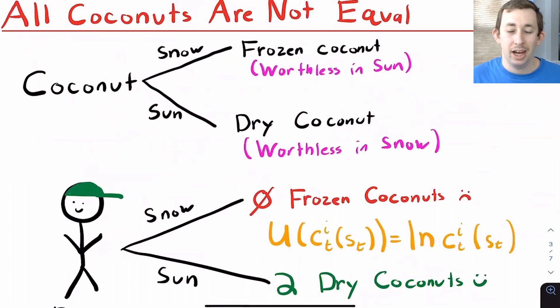In addition to the endowments being weather dependent, all coconuts are not created equal. Now you might say, well, isn't a coconut just a coconut? And the answer is yes. It's easier if you think about a coconut in each type of weather as a different good. It just makes it easier to keep track of.